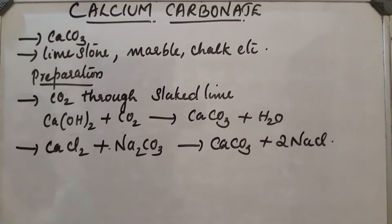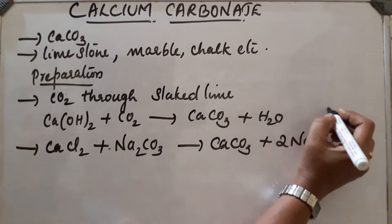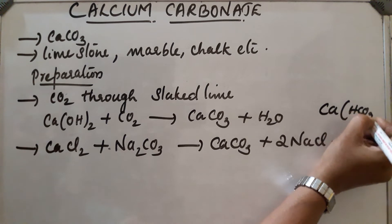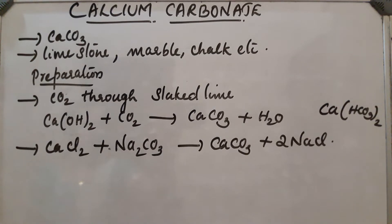During the process of passing carbon dioxide through slaked lime, we have to avoid excess of carbon dioxide, because it leads to the formation of water-soluble calcium bicarbonate, which is soluble in water. So we must avoid excess carbon dioxide during this process.